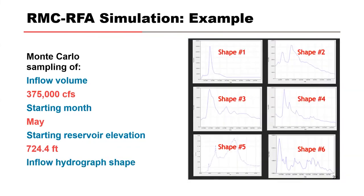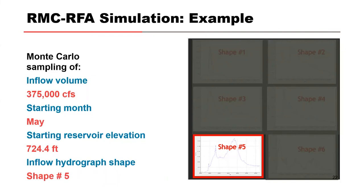The last step in the inner loop is to randomly select the inflow hydrograph shape. RFA allows the user to input as many hydrograph shapes as desired, with a user-assigned weight for each hydrograph that determines its relative frequency of being sampled. In this example, six hydrograph shapes were input, including observed shapes and the PMF hydrograph shape. Each was given equal weight of one. Hydrograph shape number five was randomly selected and will be used to scale the inflow volume sampled in step one.